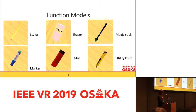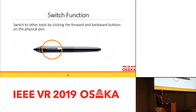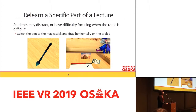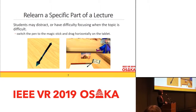There are different tools in the IVR node system to help students take notes, learn lectures, and review. Students can switch the stylus to other tools by clicking the forward and backward buttons on the physical stylus. We know reviewing is an important part of learning, and students may get distracted during class, so there is a function that allows students to drag the time slider and revisit a specific part of the lecture.